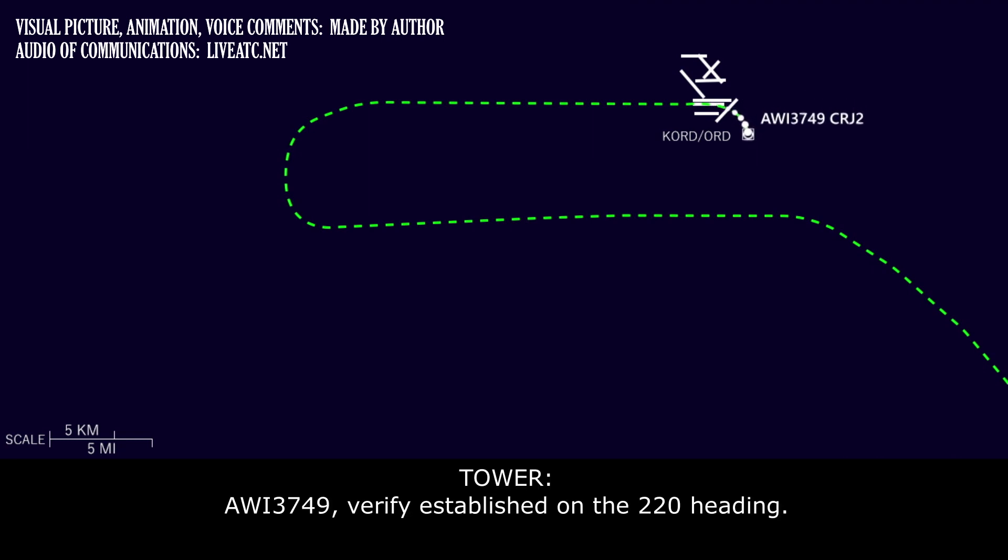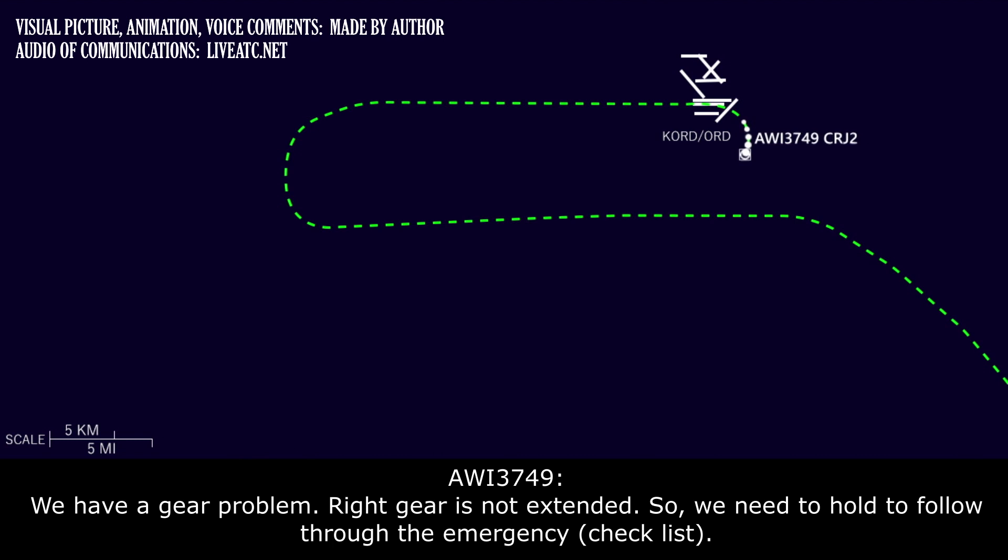Wisconsin 3749, verify established on the 220 heading. Heading 220, Wisconsin 3749. Wisconsin 3749, do you require any assistance? We have a gear problem, right gear is not extended, so we need to hold to follow through the emergency.